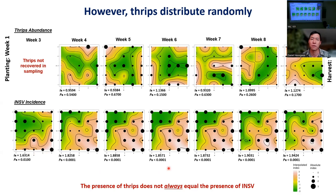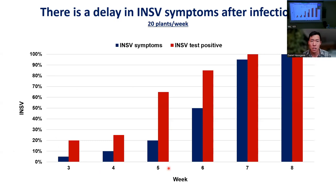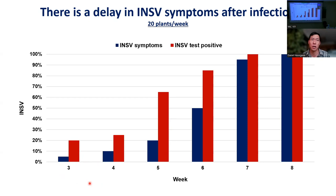There is always a lag between INSV infection and visible symptoms. In one field sampled last month, 20% of plants tested positive at week three, but only about 5% were showing symptoms. This lag means the true infection rate within a field is always higher than what symptom scouting alone reveals. Disease may continue to develop further as the season progresses.